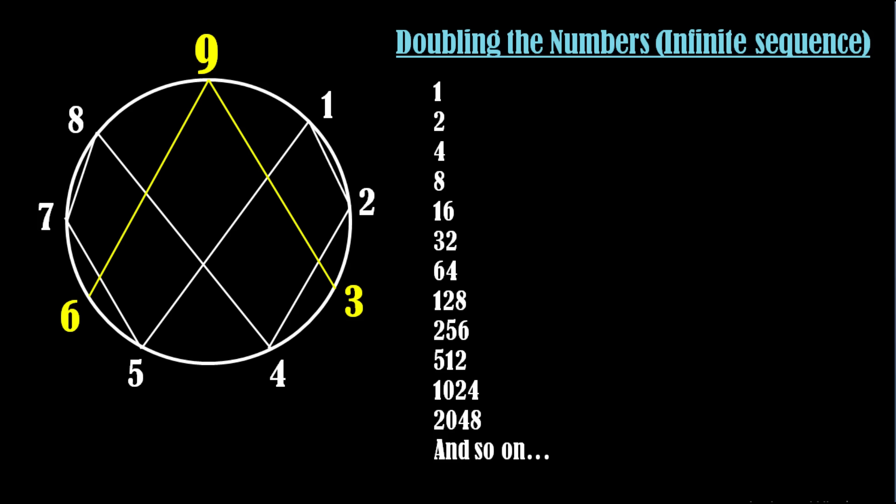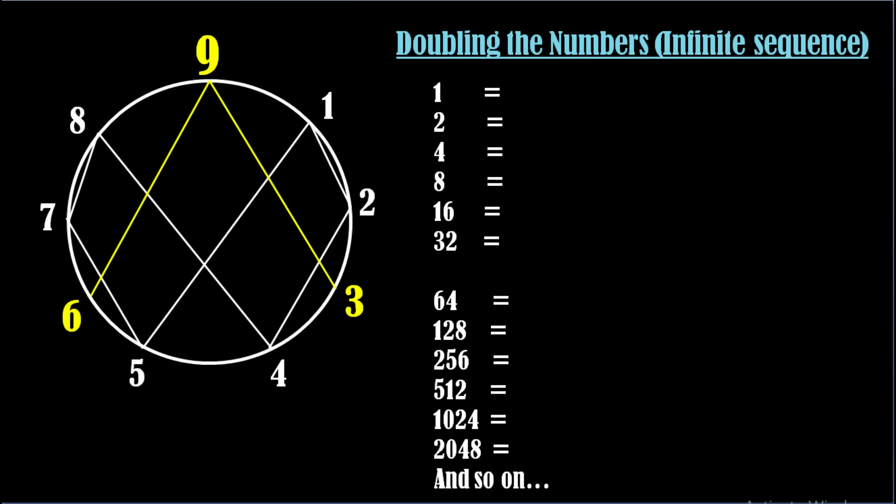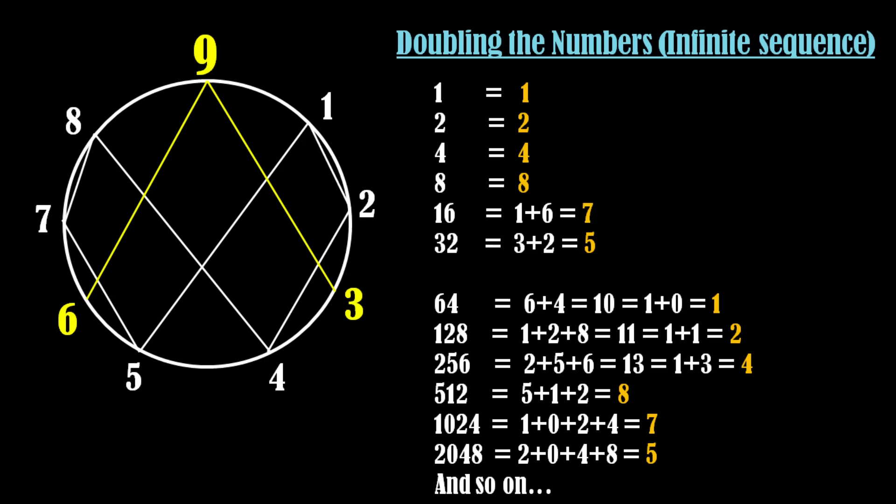Now let's try to understand the sequence mathematically. You can see here is a sequence of doubling of numbers starting from number 1. Like 1, 2, 4, 8 and so on. Here the next number is double of the previous number. Now we will convert all of these numbers into a single digit number. For this we will add the digits of the number until we get a single digit number.